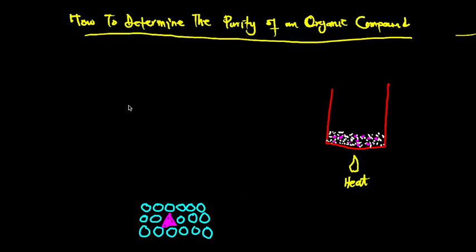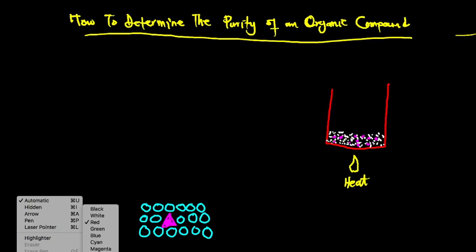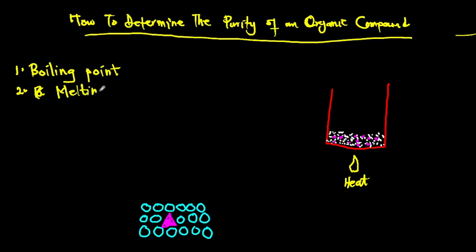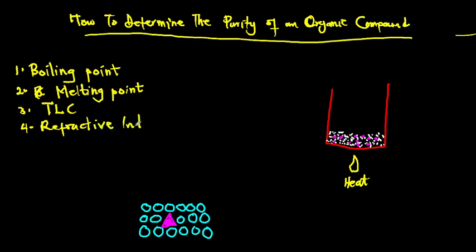Welcome to my science tutorial. In this video we're going to be talking about how to determine the purity of an organic compound, and we are looking at four ways. Number one, we'll talk about boiling point. Number two, melting point. Then we'll talk about TLC, which stands for thin layer chromatography, and number four, refractive index.